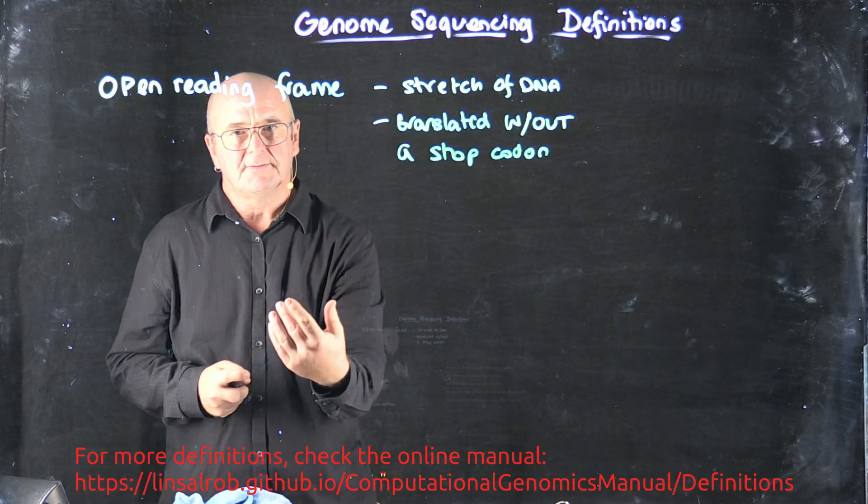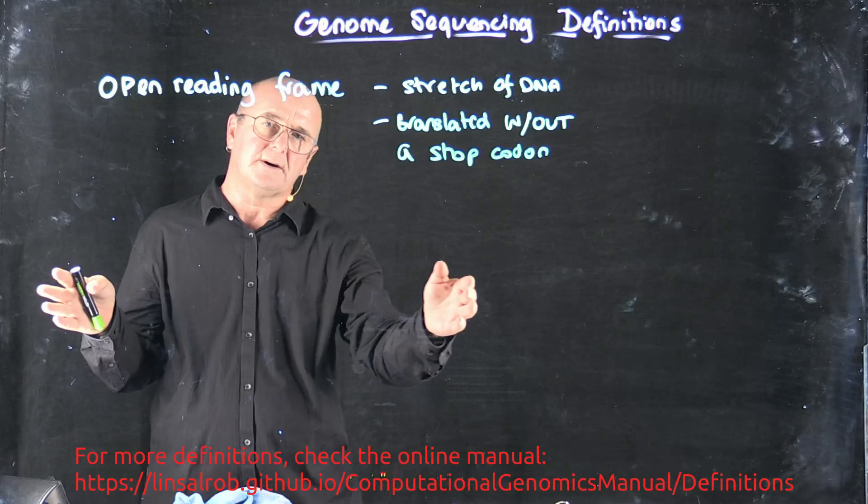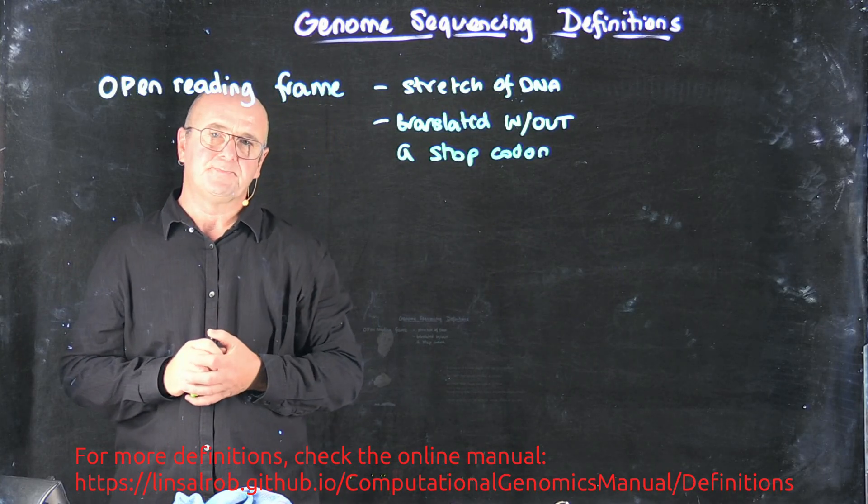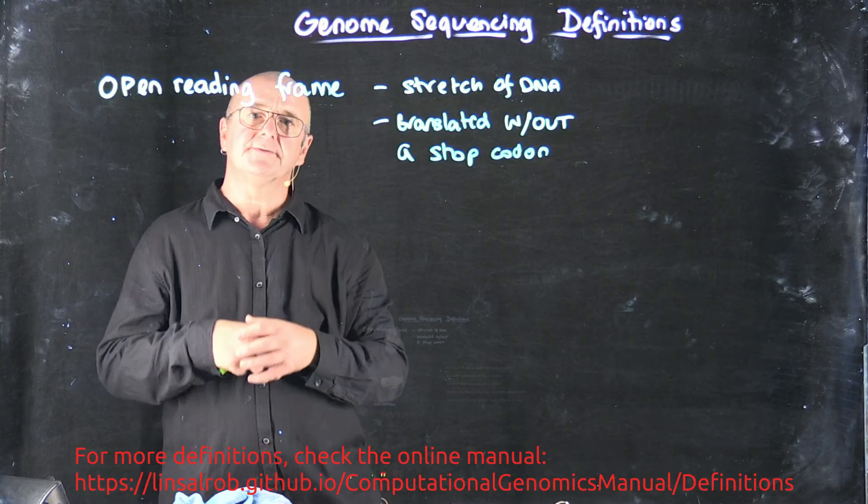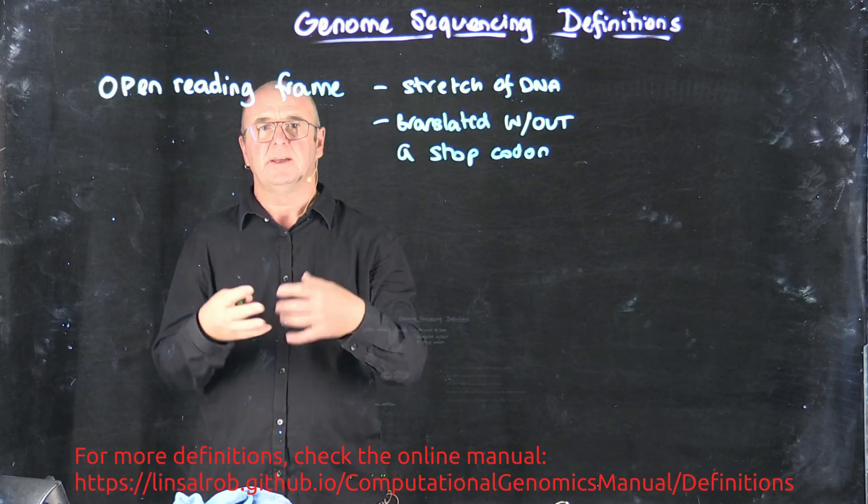As we'll see when we look at open reading frame translations, basically what this means is it's just a lot of A's, T's, G's and C's without one of the stop codons in it. Open reading frames don't mean that they're actually functional, don't mean that they're made into anything. It's just a kind of a hypothetical thing that exists.